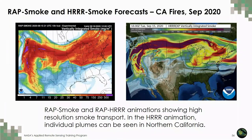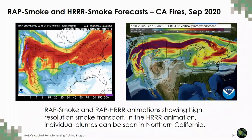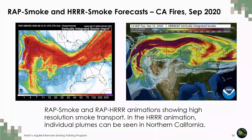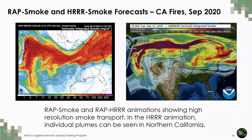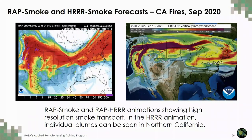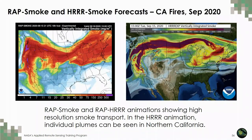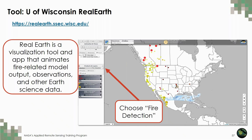Returning to our forecasts of smoke from the western U.S. fires in September 2020, these plots show the vertically integrated smoke forecasts for RAP on the left and HRRR on the right. The HRRR model is especially detailed because of its high 3-kilometer spatial resolution. Looking closely at California, you can actually see pulses from individual plumes in the animation. The HRRR smoke and RAP smoke forecasts can also be viewed using the University of Wisconsin Real Earth site — a visualization tool and app that animates fire-related model output, observations, and other earth science data.